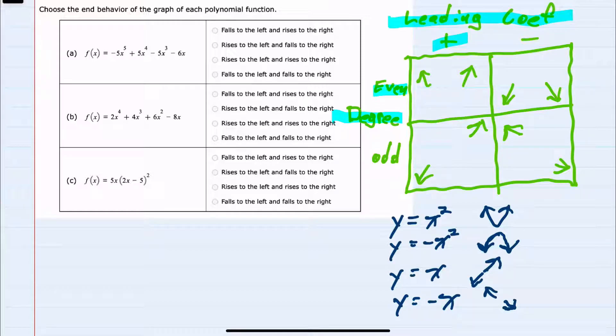For the first a, I can see that I have an odd degree. So that tells me it's going to behave on the ends kind of like a linear function. And since the leading coefficient is negative,